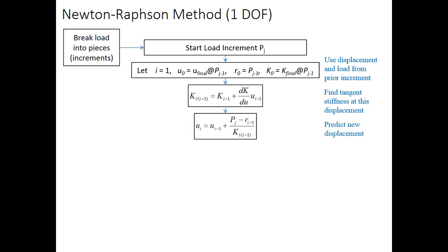That moves us into now the first actual iteration. So, the first new predicted displacement, U1, is equal to U0, plus the force that we're adding in this increment, so PJ, minus where we were already.